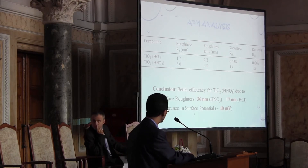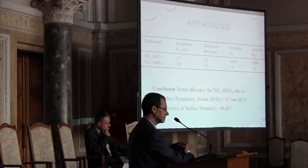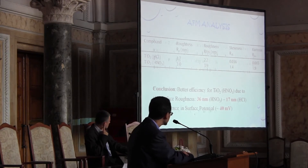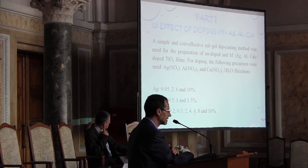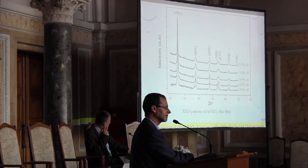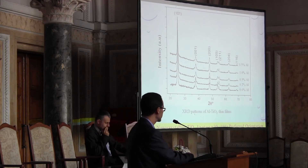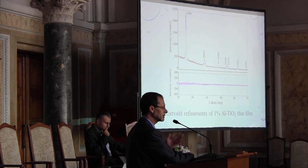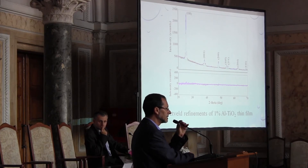After studying surface effects, we moved to doping effects. We doped TiO₂ with silver, aluminium, and copper using the same sol-gel technique, varying the dopant concentration. We consistently obtained single-phase anatase, with a preferred orientation. We investigated how the nature and concentration of the doping element affects photocatalytic activity.